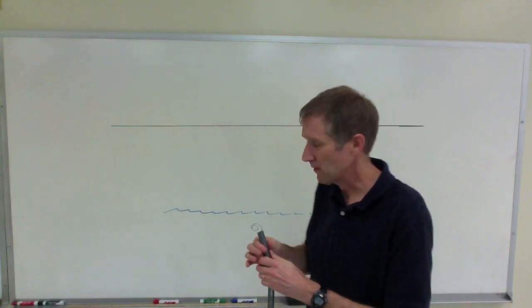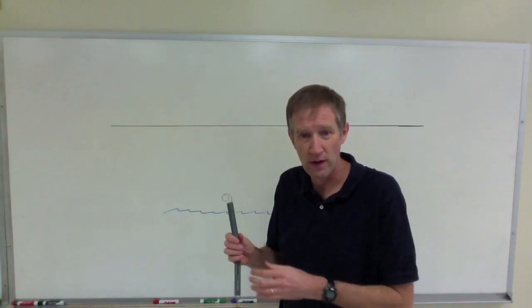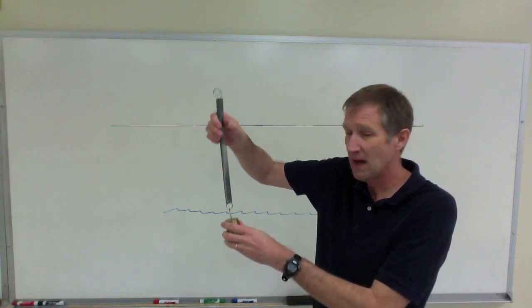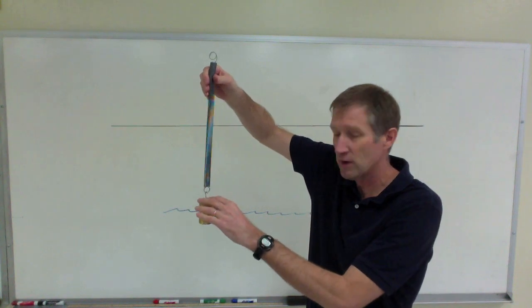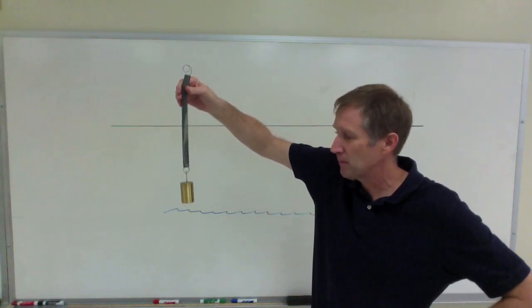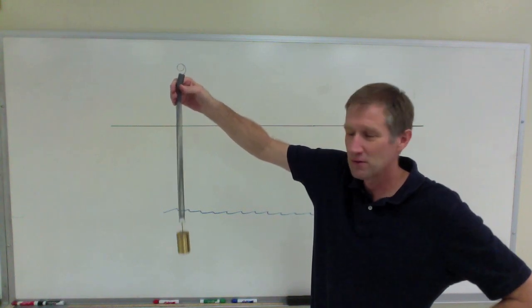All right, I want to talk about a wave and what is a wave. Well, just to start off, to have a wave you have to have a disturbance. You have to have some sort of disturbance in nature. So here we have something bobbing up and down which is disturbing nature.